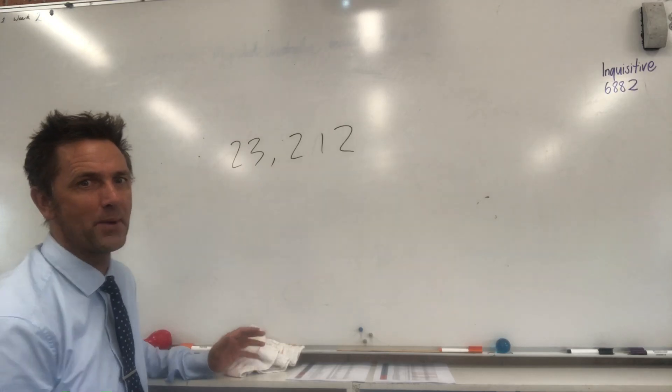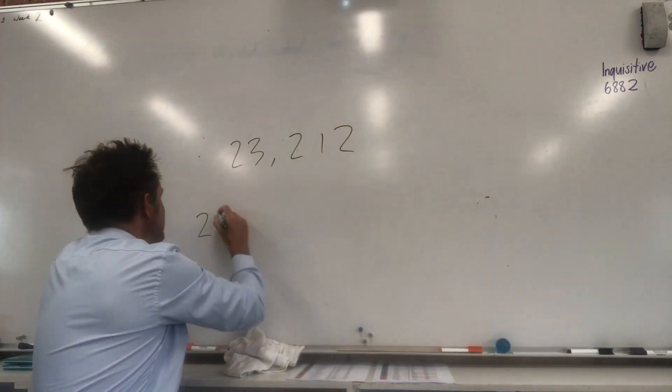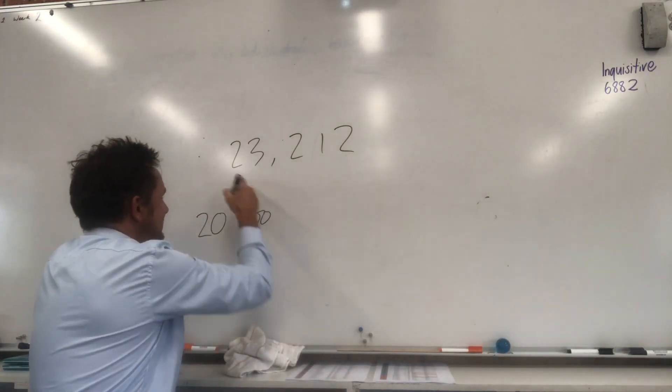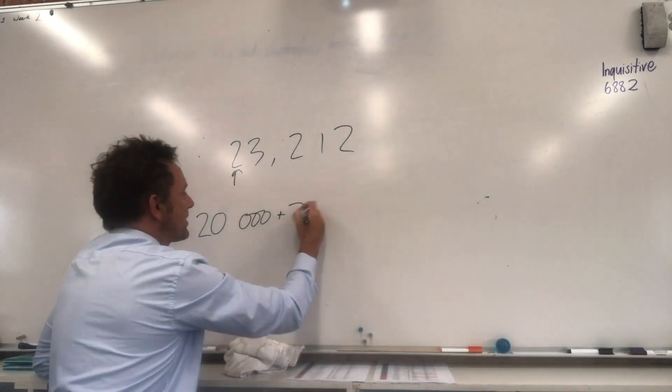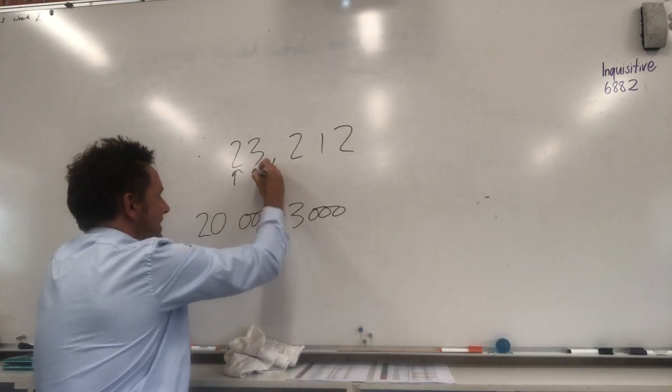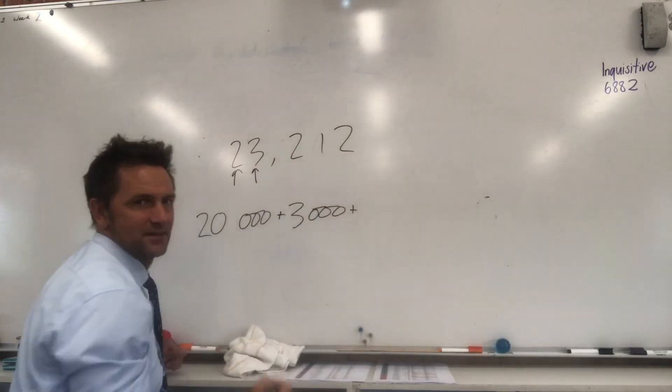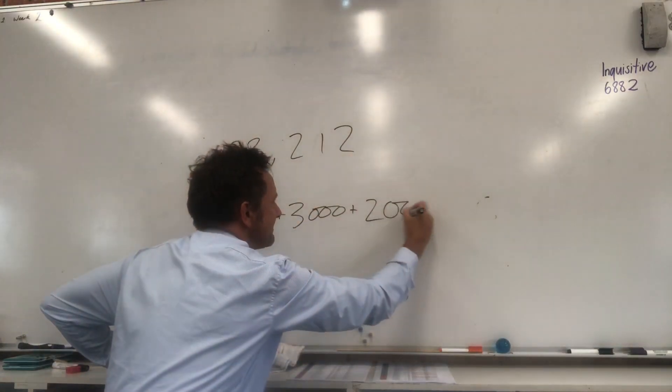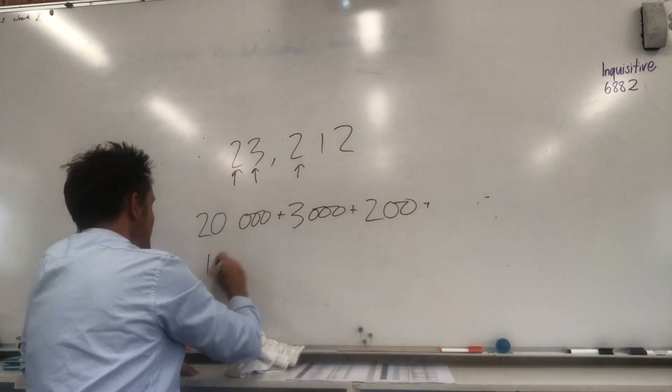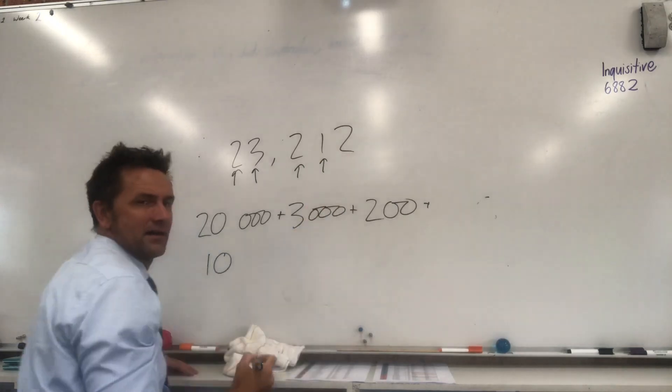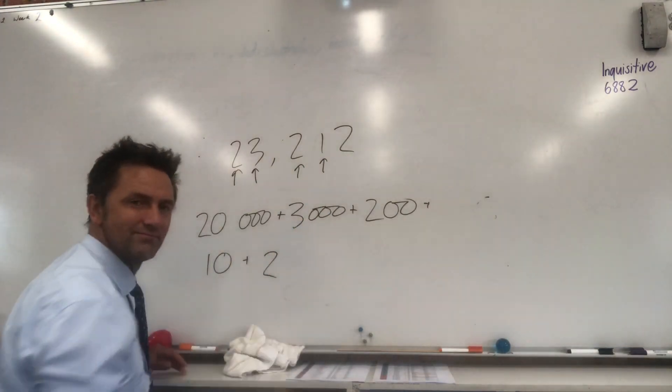Hope you paused me, and I hope you went like this. 20,000, because that's that 2 there, plus 3,000, that's that 3 there, plus 200, that's the 2 there, plus 10, that's that 1 there, plus 2.